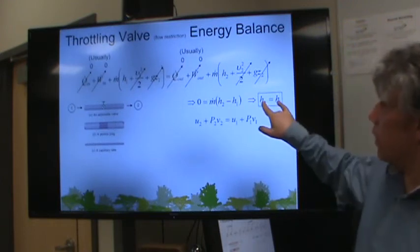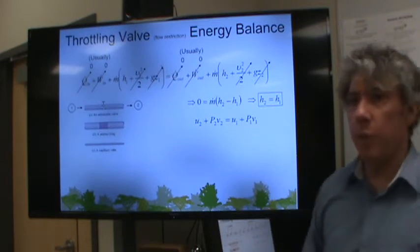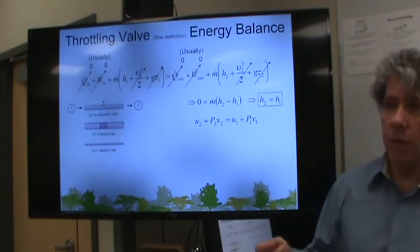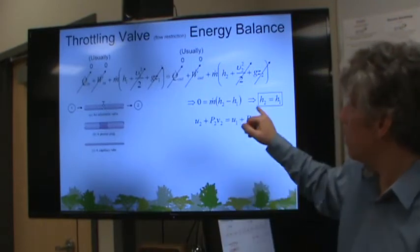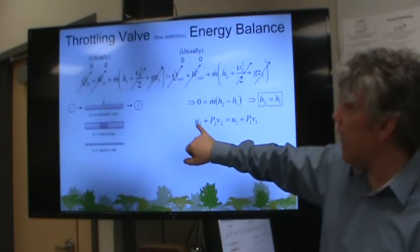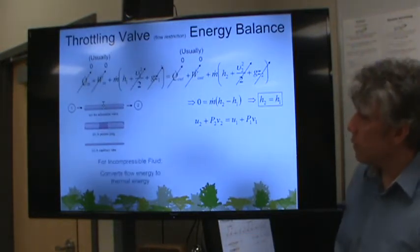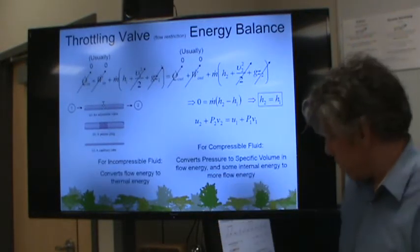And this is the equation that we'll use for throttling valves. And to understand what's really going on, we have to expand enthalpy. And remember that enthalpy is not a thing. It doesn't exist. It's just a convenience thing that we use. It's just a convenience definition, I should say, that we use to combine thermal energy and flow energy together.